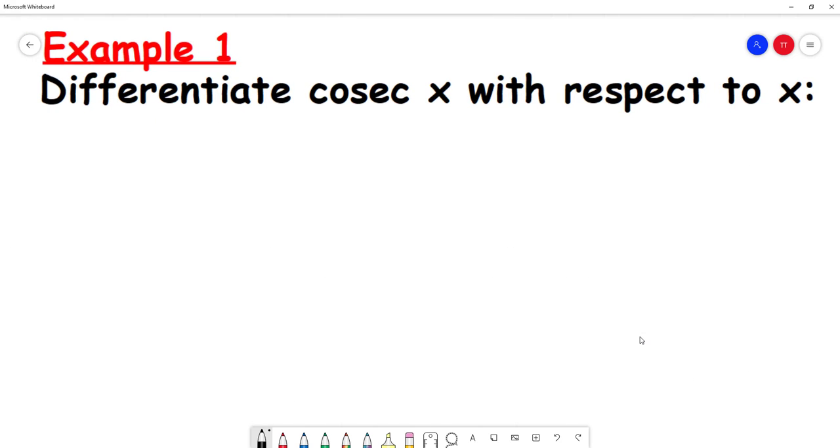What we're going to do for a question like this is what we did before - write down y equals cosec x. Now we're going to write it as a fraction, which we know is the same as 1 over sine x.